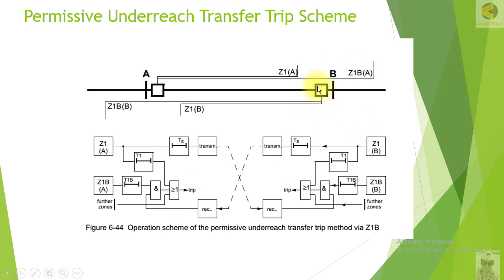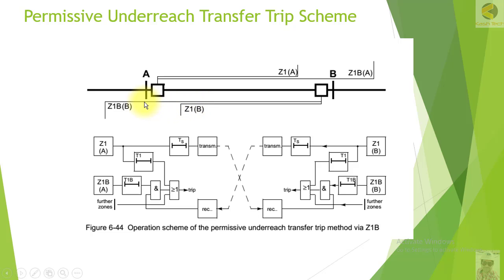Without this scheme, Station B trips instantaneously while Station A's relay would wait for Zone 2 time. This is the benefit of the permissive underreach transfer trip scheme. Now consider a fault in the reverse direction behind Station B: the relay at B will not pick up and will not send any permissive signal to Station A.